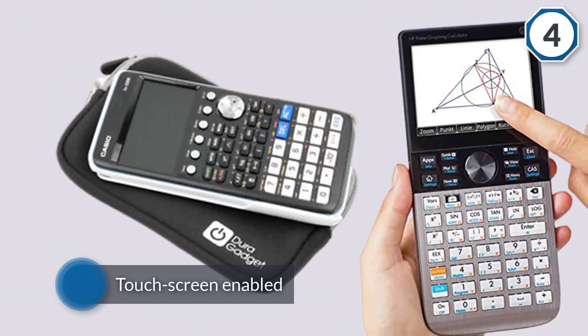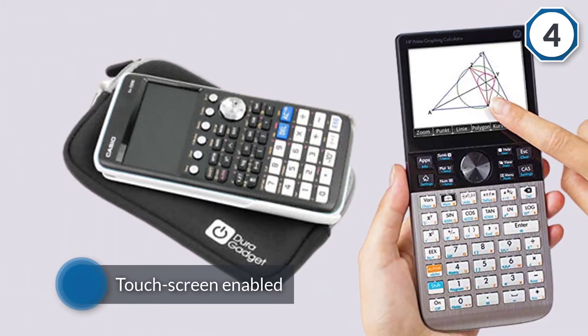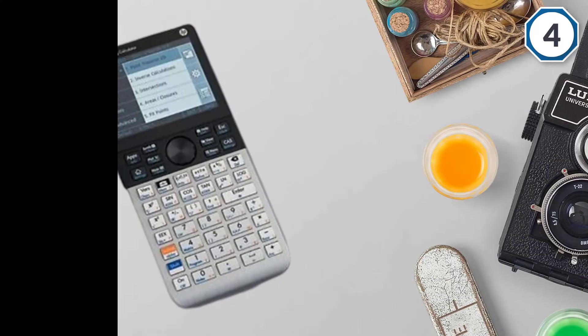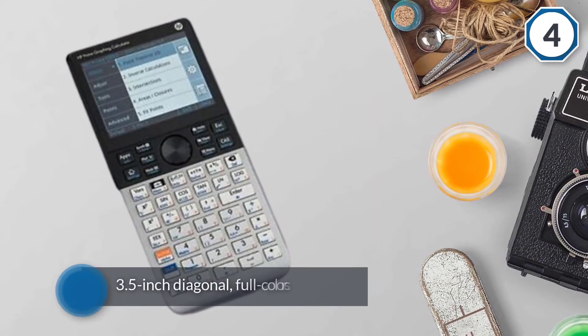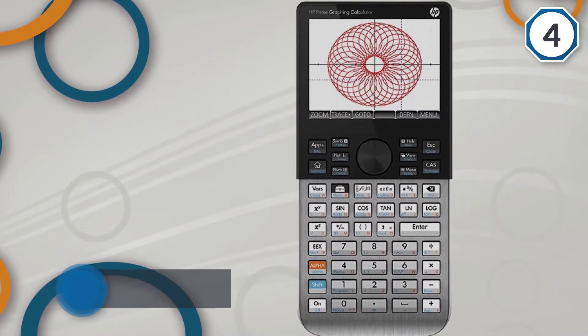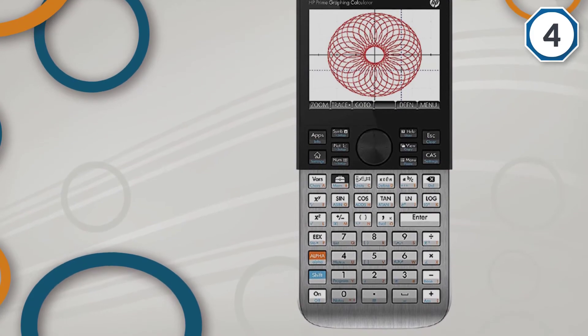Among the Texas Instruments and Casios, the HP Prime graphing calculator is another worthy contender in the graphing calculator market. Touch screen enabled, the calculator lets you zoom, add images, and sketch on its 3.5-inch diagonal full-color screen.